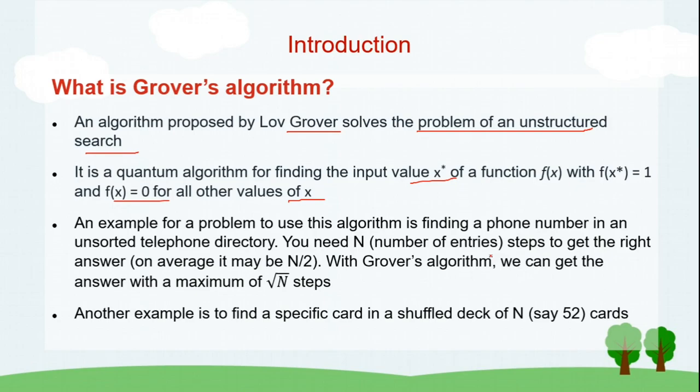If you are lucky, you will be able to get it quickly with a few searches, but if you are unlucky, you have to go till the end, which means you have to do n searches. In fact, n minus 1 searches to get the right answer. And if you do some random search, on average you may be able to do it in n by 2 searches. With Grover's algorithm, you will be able to get the answer in square root of n steps.